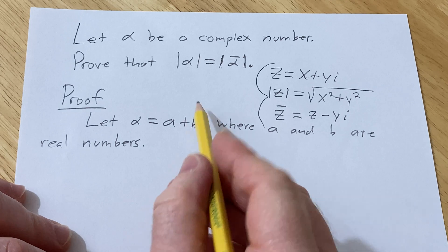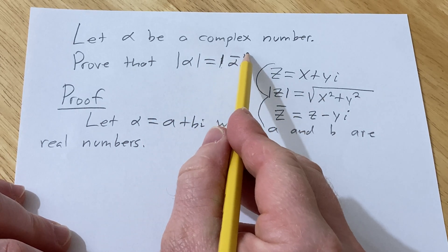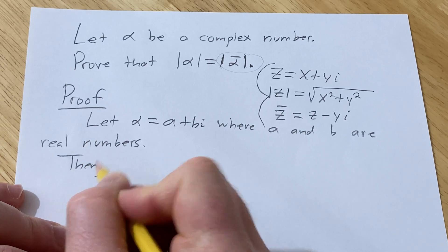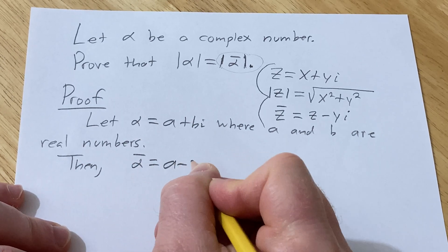Okay, so now we just basically have to show that this is true. Let's start with this one. Then, the conjugate of alpha is a minus bi.